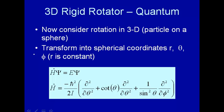In the 2D case we considered, we transformed from Cartesian coordinates into polar coordinates, and we found that the resulting Schrödinger equation was fairly simple. Here we're going to do the analog into three dimensions, go into spherical coordinates. So let's see what we're talking about here.